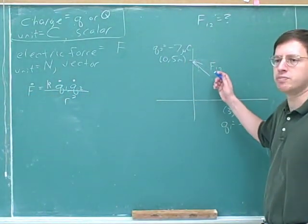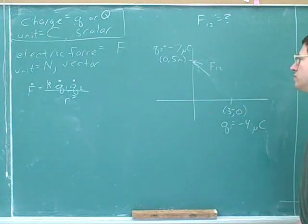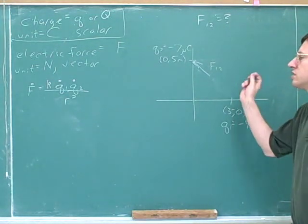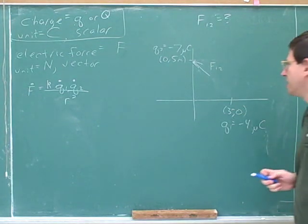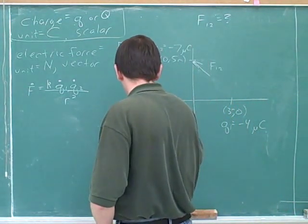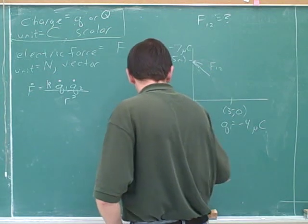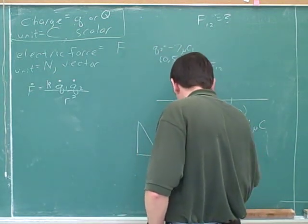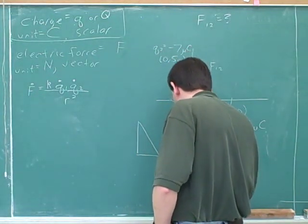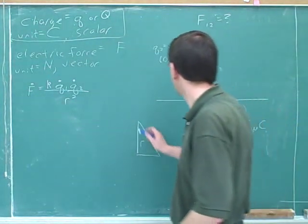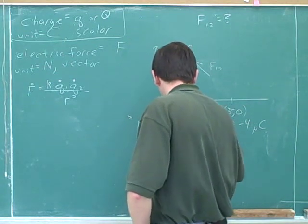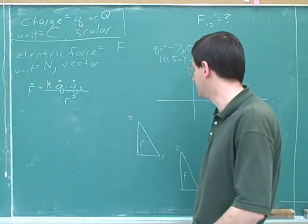The key here is that now we're working in two dimensions. And the key for two dimensions is to draw two separate triangles off to the side, a force triangle and a distance triangle. I'll put an R here to show this is the distance triangle, and an F to show this is the force triangle. Here's charge two, here's charge one. This represents the origin.